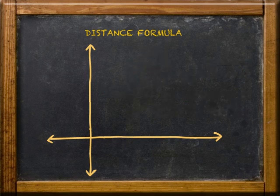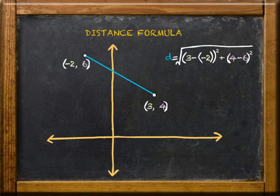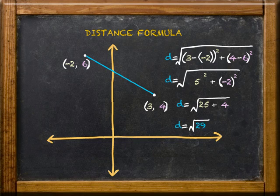So let's do the next problem together to find the length of the segment shown. Distance equals the square root of 3 minus negative 2 squared plus 4 minus 6 squared. This simplifies to distance equals the square root of 5 squared plus negative 2 squared, or the square root of 25 plus 4. So distance in this case is the square root of 29.